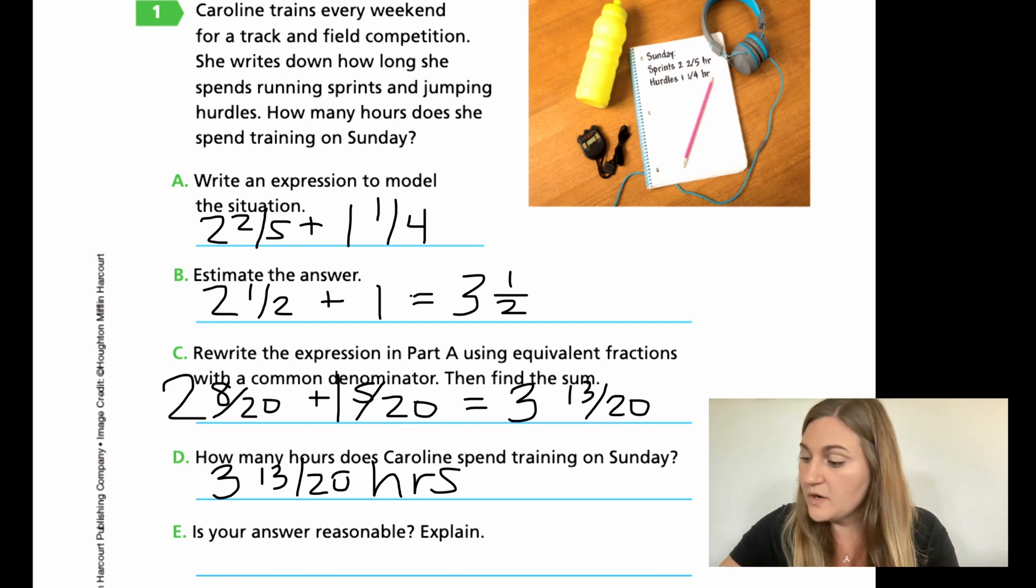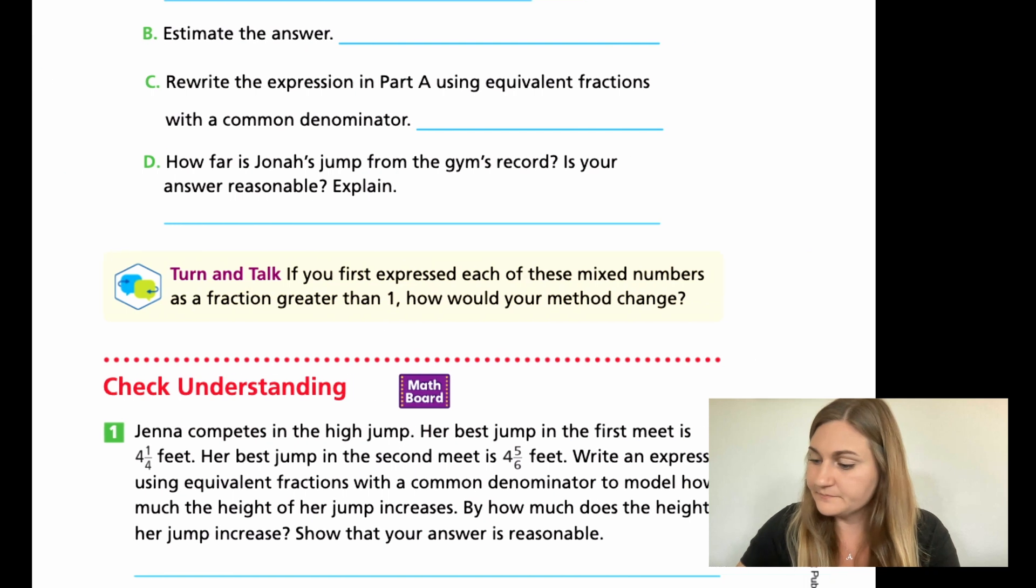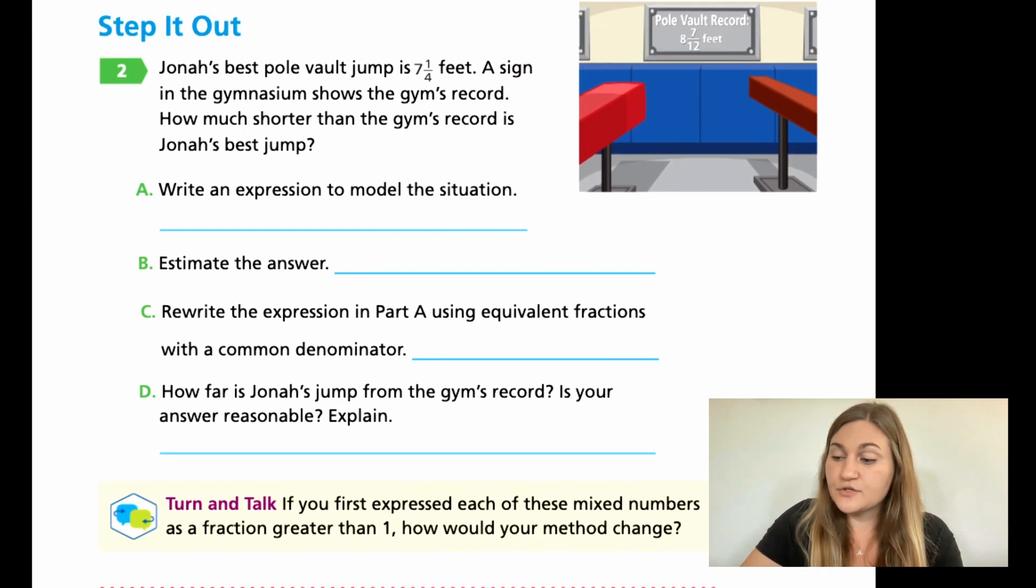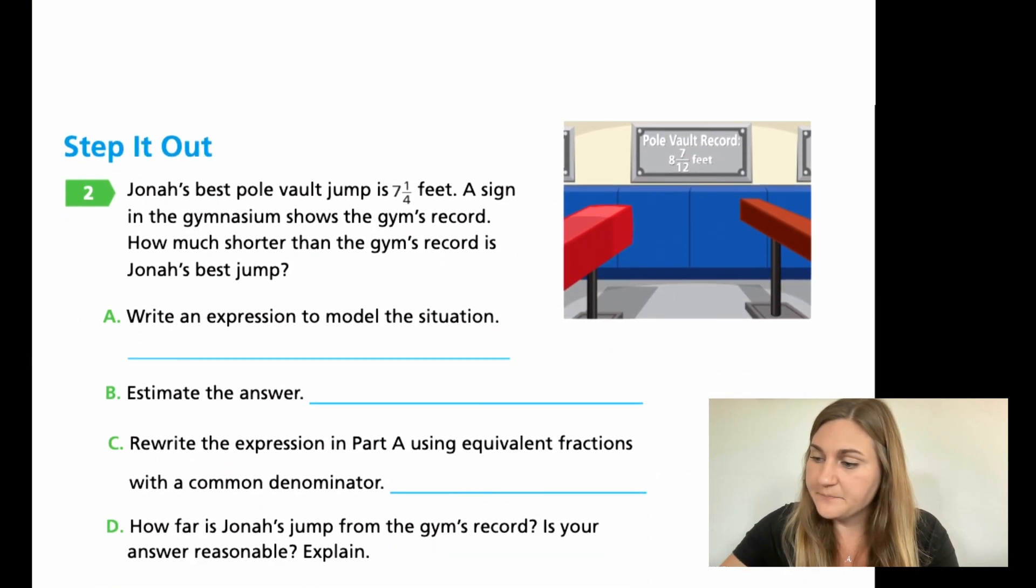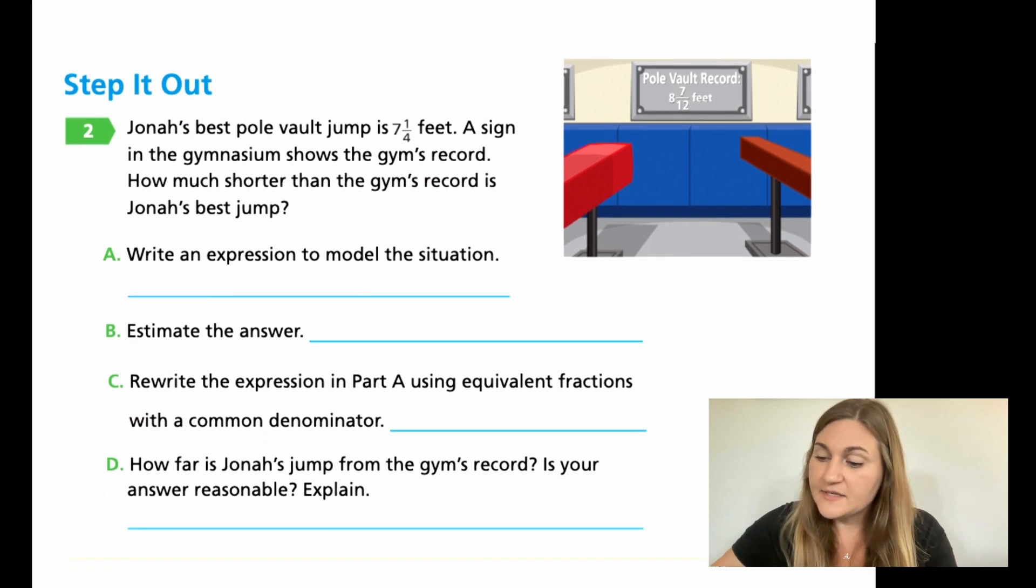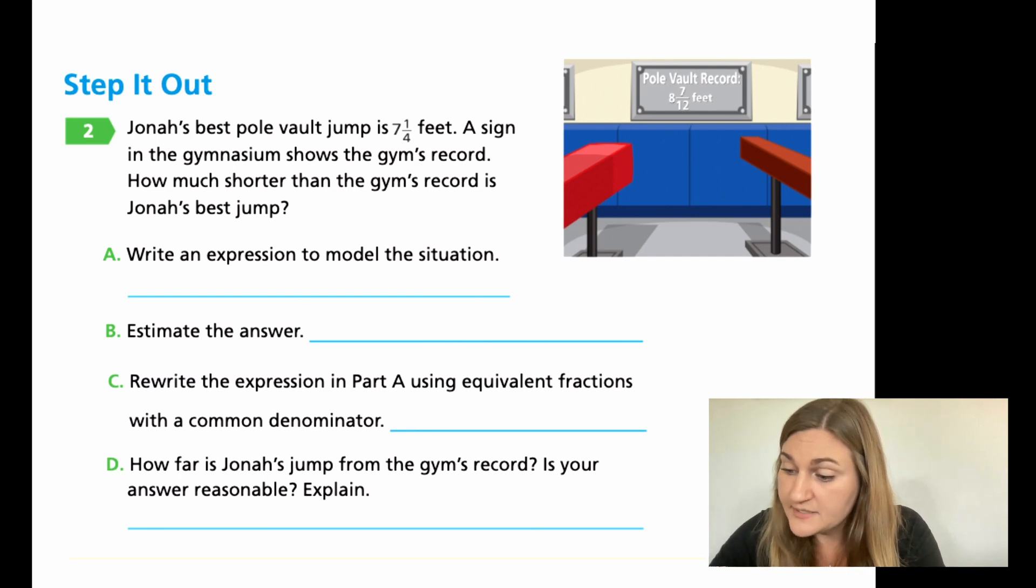Let's go ahead and flip the page to 158. We're just going to be working above this red dotted line. The step it out question number two says Jonah's best pole vault jump is 7 and 1/4 feet. A sign in the gymnasium shows the gym's record. How much shorter than the gym's record is Jonah's best jump? Jonah's best jump is 7 and 1/4. And over in the picture to the right, the pole vault record says 8 and 7/12.